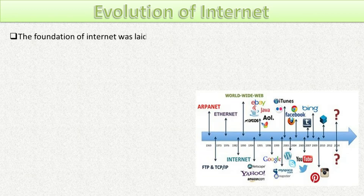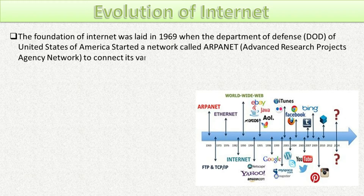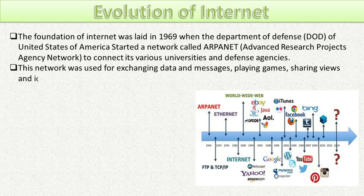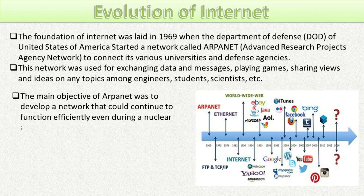The foundation of the internet was laid in 1969 when the Department of Defense of the United States of America started a network called ARPANET — Advanced Research Projects Agency Network — to connect its various universities and defense agencies. This network was used for exchanging data and messages, playing games, sharing views and ideas among engineers, students, and scientists. The main objective of ARPANET was to develop a network that could continue to function efficiently even during a nuclear attack.